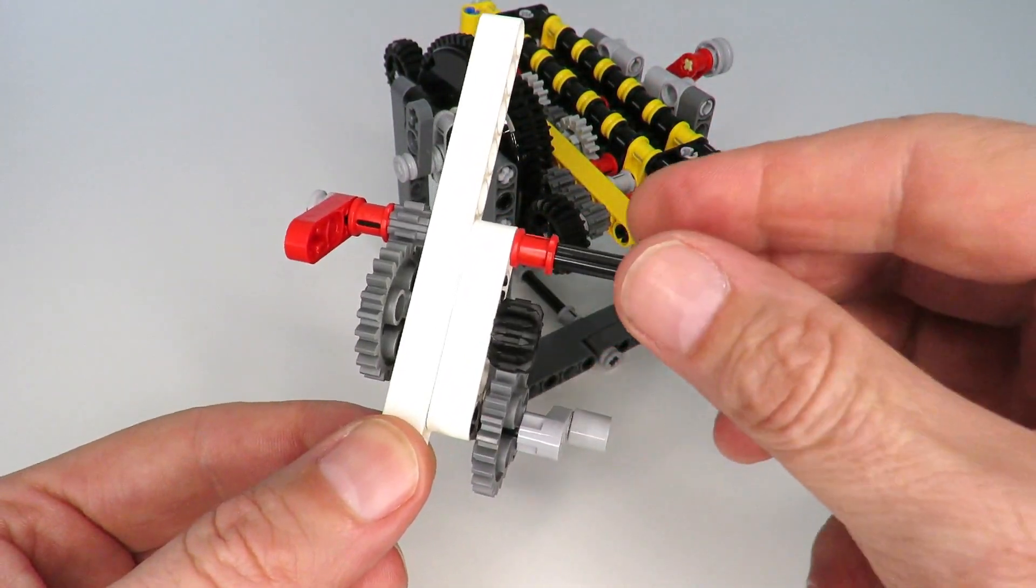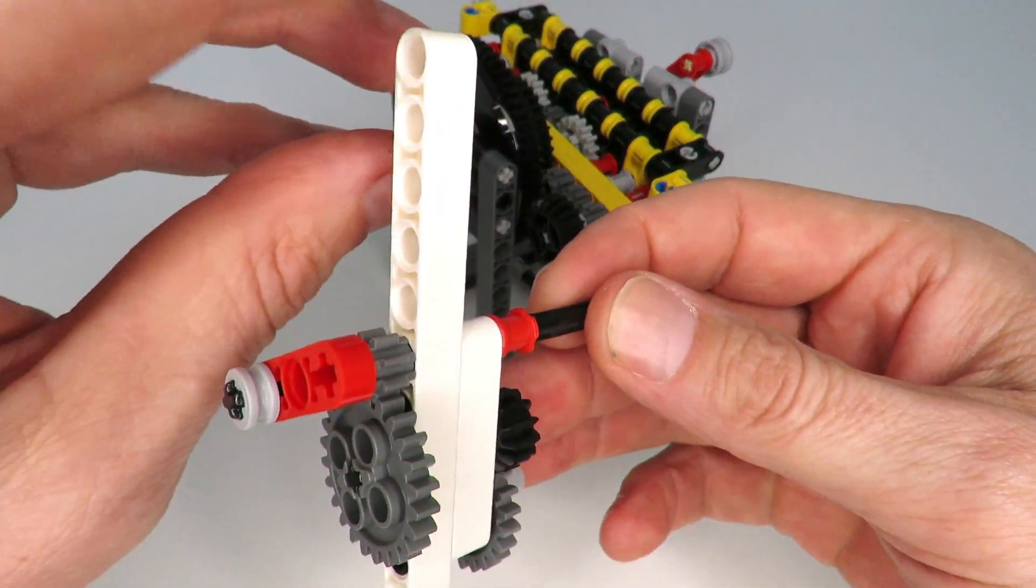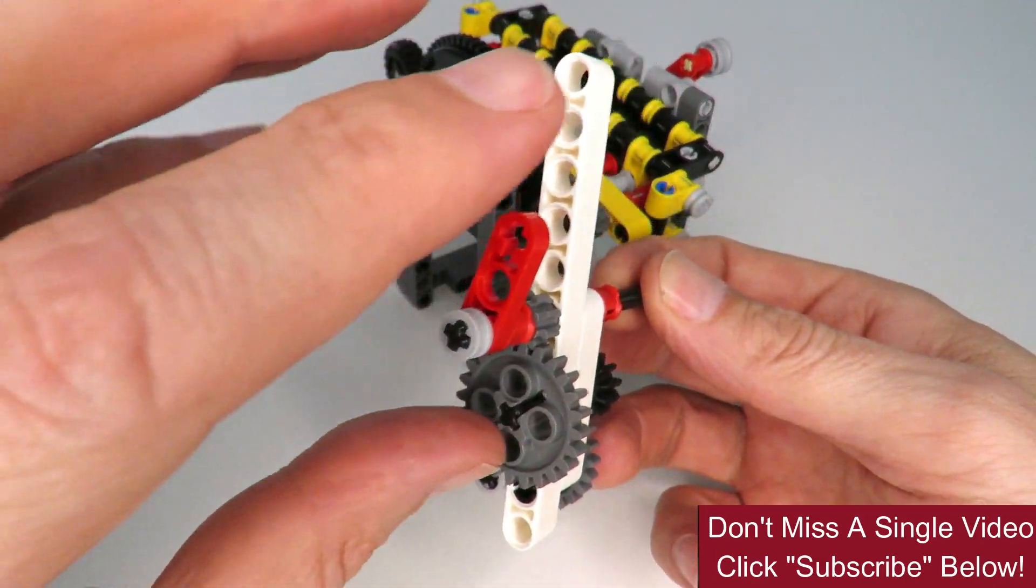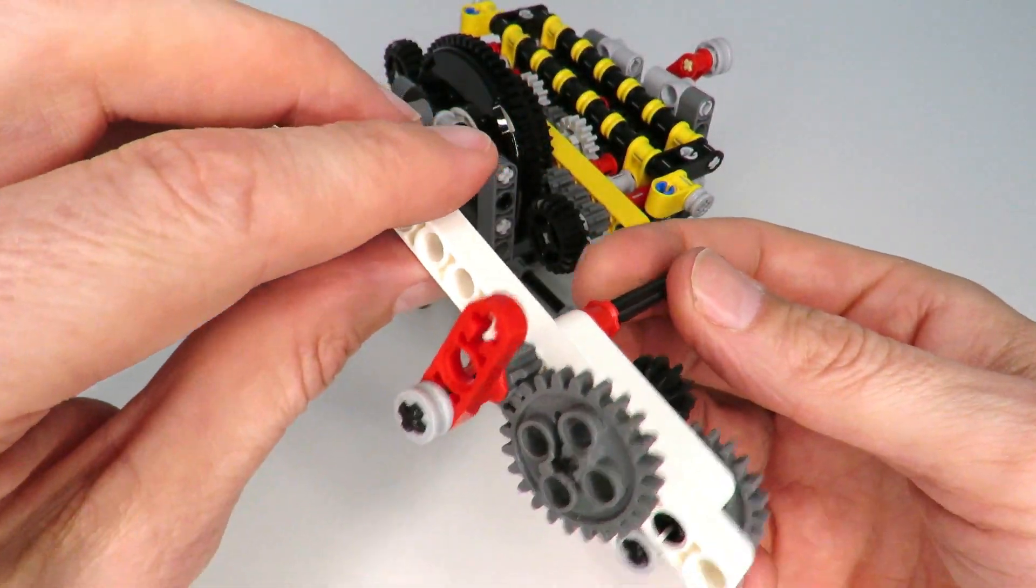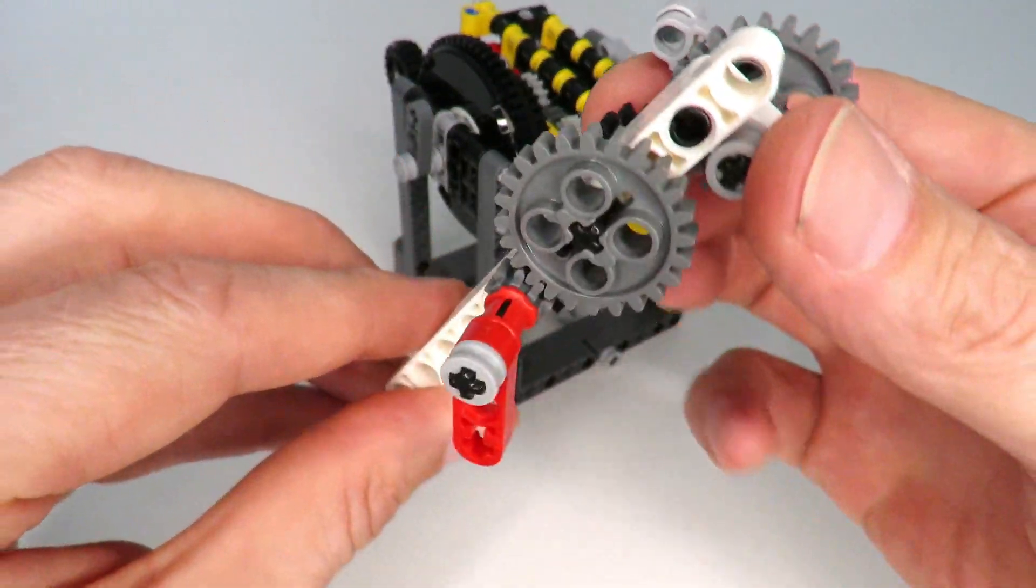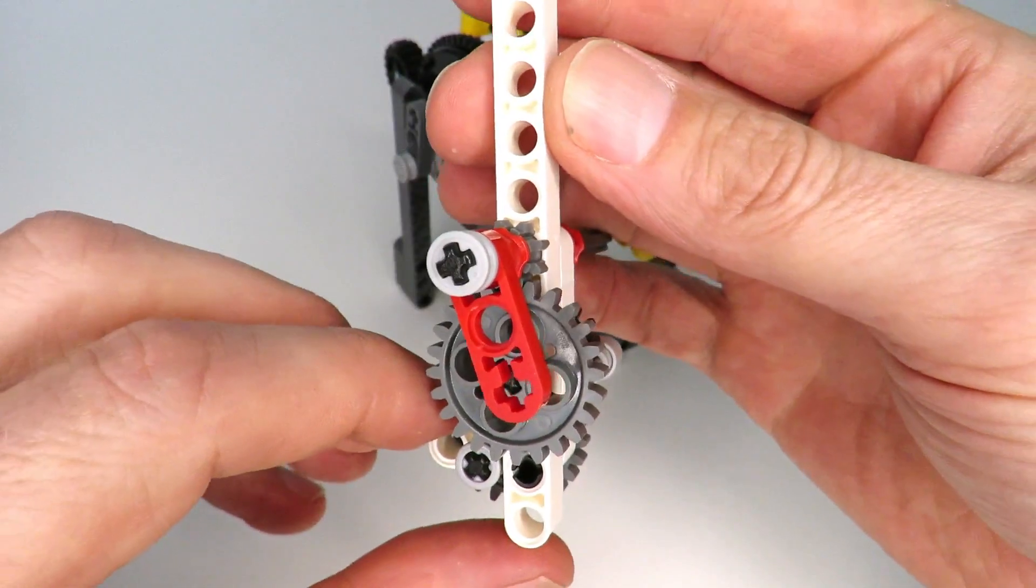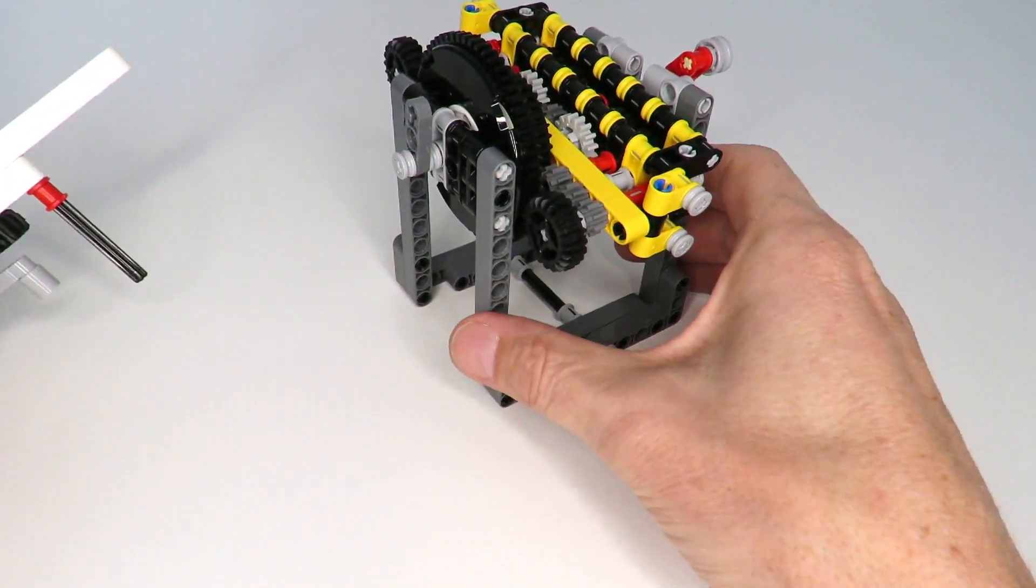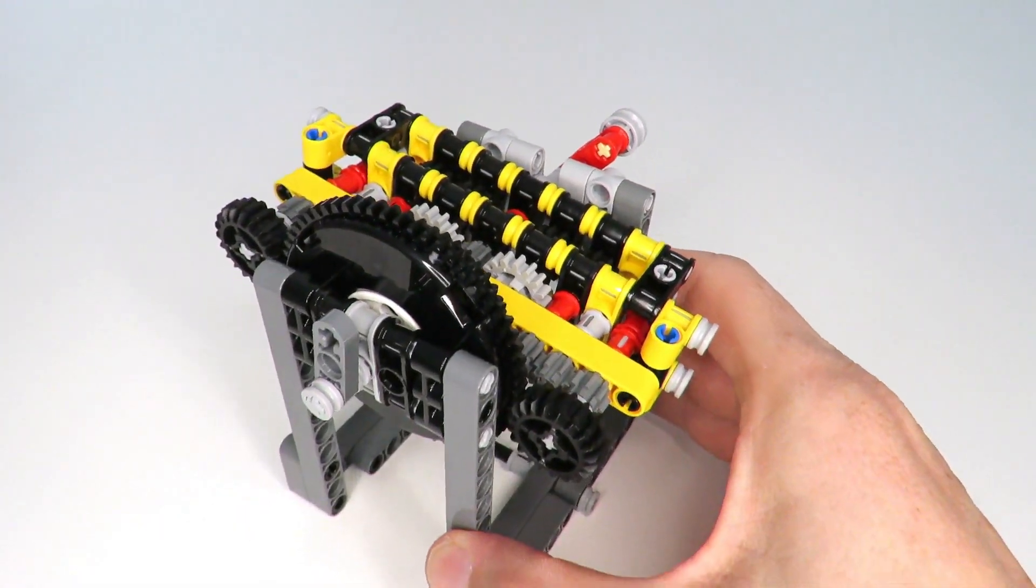turn this gear to give us the 6-to-1, but also rotate the entire mechanism at the same time one revolution, then we would get the six revolutions from the gearing mechanism and one more revolution just from rotating the entire unit. And that was my breakthrough for creating this.